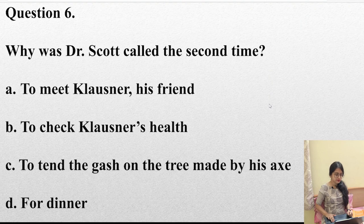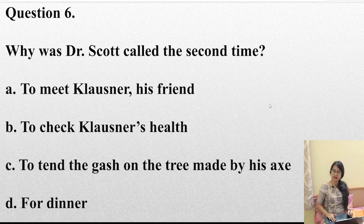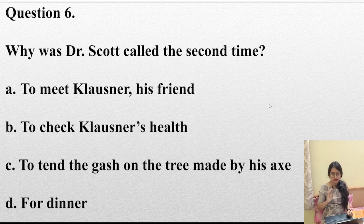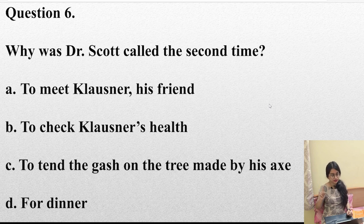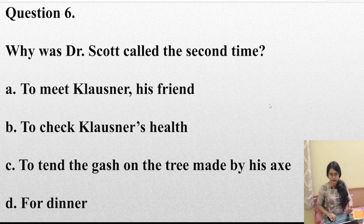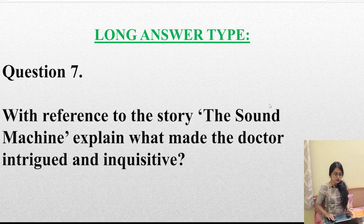Question number 6: Why was Dr. Scott called the second time? Not just to meet Klossner his friend, and not to check his health — that was the first visit. Option C: to tend the gash on the tree made by his axe. His main motive was that he wanted Scott to check whether whatever he had heard in his machine was correct or not, and ultimately tending the wound was the main reason Scott went there. So we choose option C.